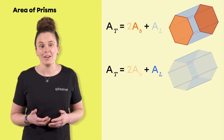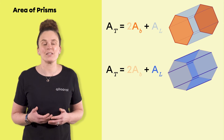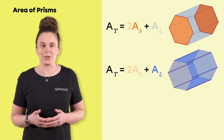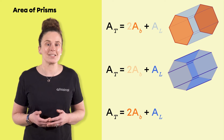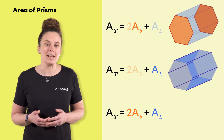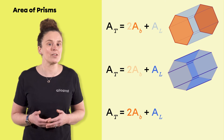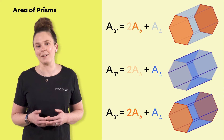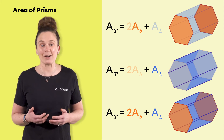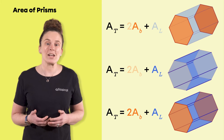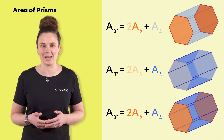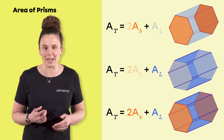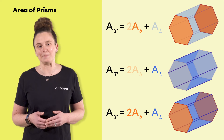Here, the lateral area is made up of six rectangles. The total area, generally denoted A subscript T, is the surface of all the faces forming the solid. Therefore, we conclude that the total area is equal to two times the area of one base plus the lateral area.